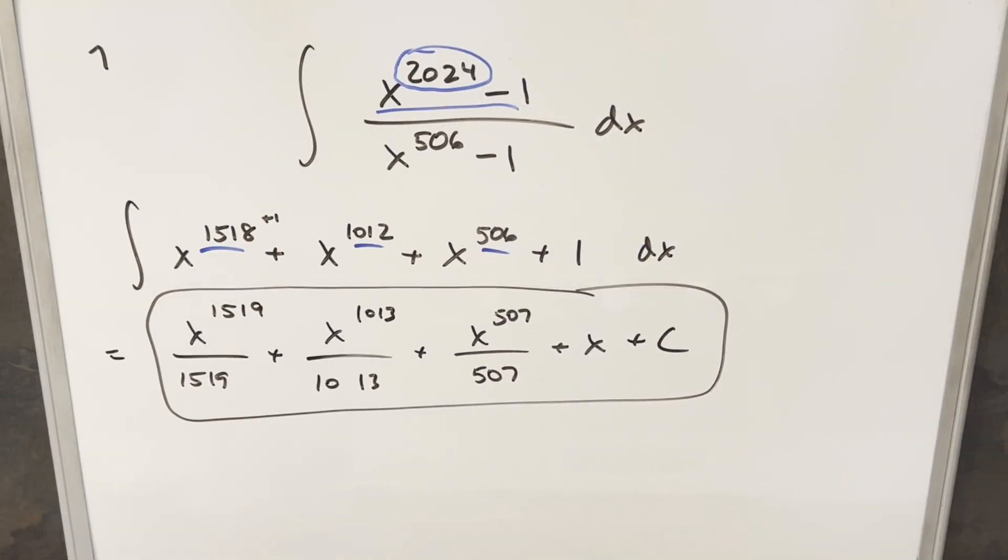So it turns out this would have been a pretty good problem for the 1519 integration bee, or the 1013 integration bee, or even the 507 integration bee, but I'm pretty sure it doesn't go back that far. The furthest of, the oldest MIT integration bee I've seen is like 1991, I think. Okay, so there you have it. After a little bit of algebra and factoring, we ended up with just power rule. Thanks everyone for watching. Have a good day.